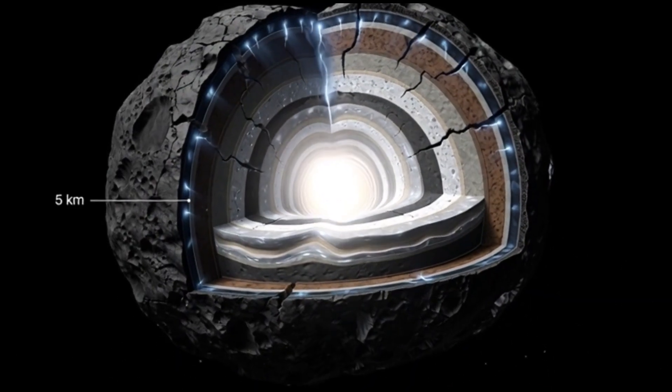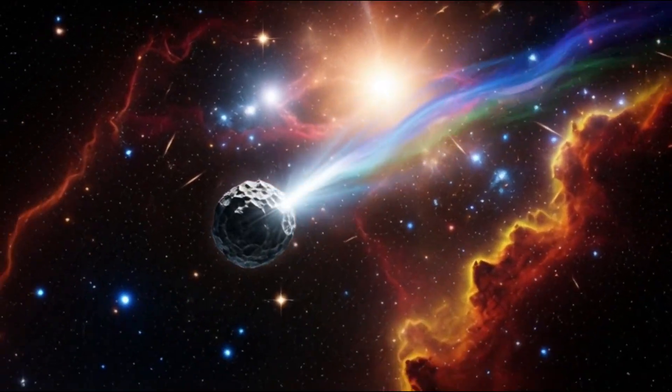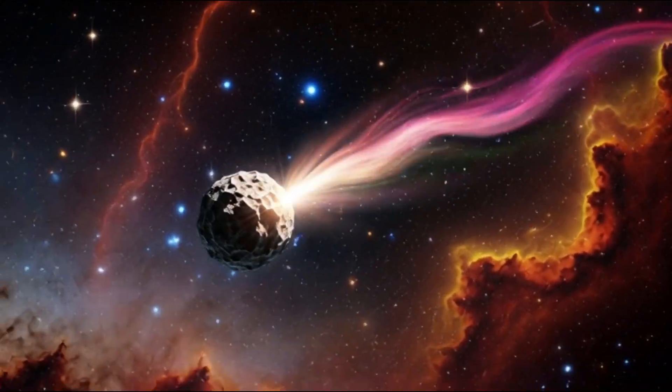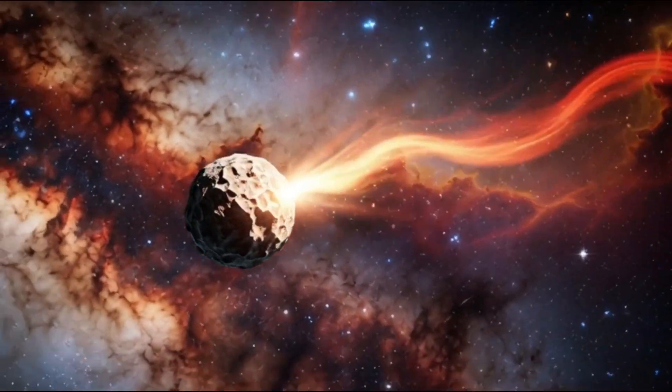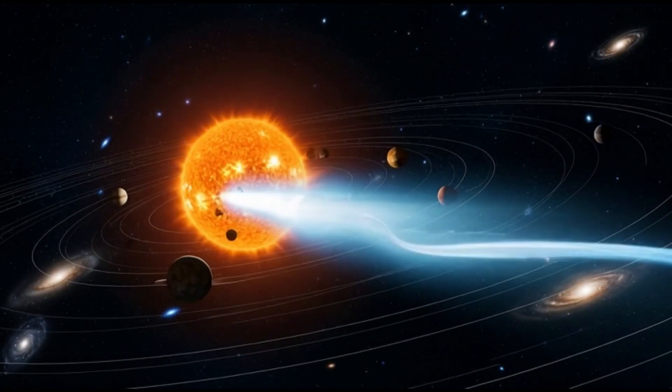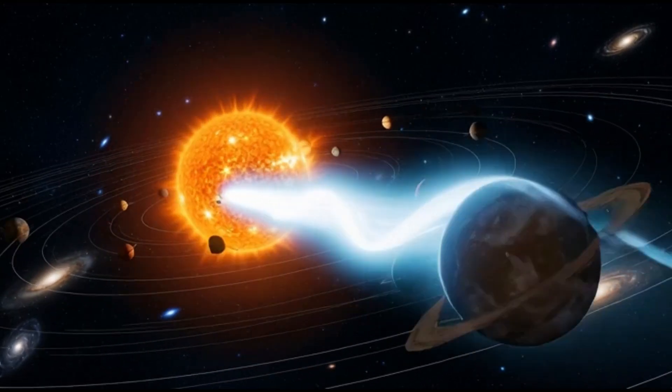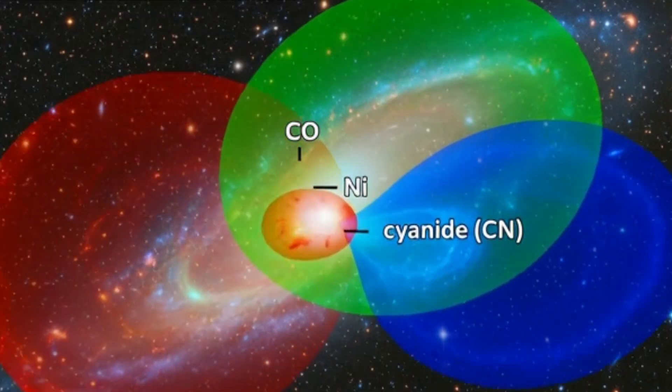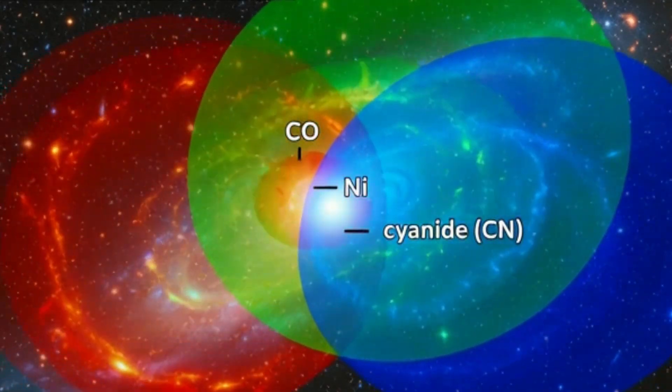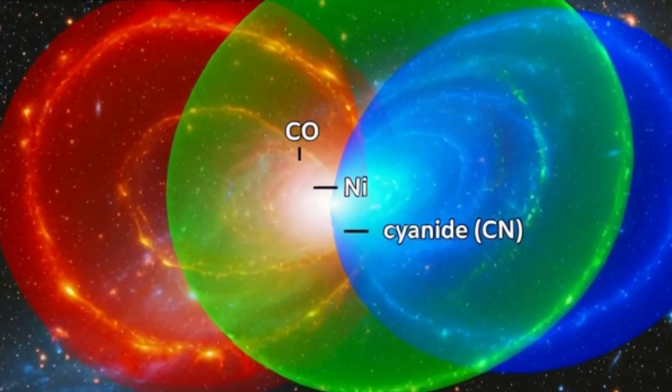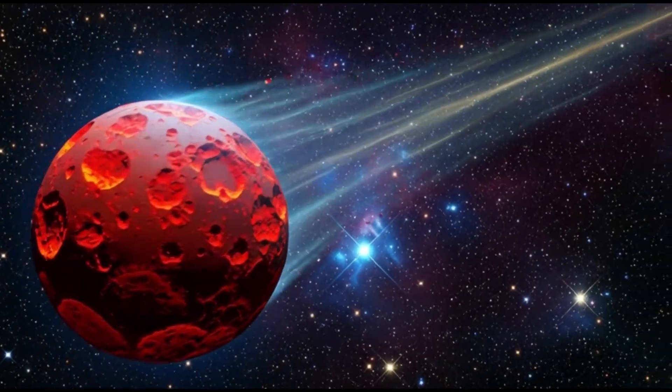If the data holds, it means one of two things. This comet contains minerals or compounds no one has seen in any natural comet before, or 3i Atlas formed in an environment with chemistry completely unlike anything in our solar system. Either possibility is a problem in the best scientific way. Because while chemists argued over the nickel mystery, the comet had another move planned. And this one wasn't subtle.